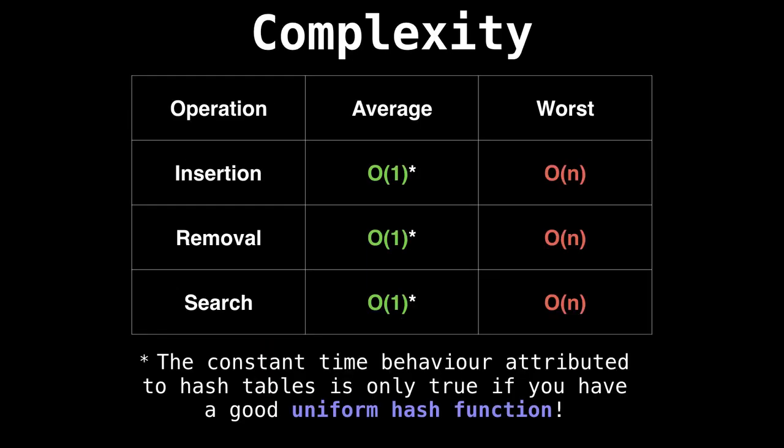So the time complexity of the hash table is actually pretty remarkable. In fact, it's amazing. So on average, we can achieve constant time for insertion, removal and search. But if you have a terrible hash function, that's not uniform, then you can get linear time, which is really, really bad.